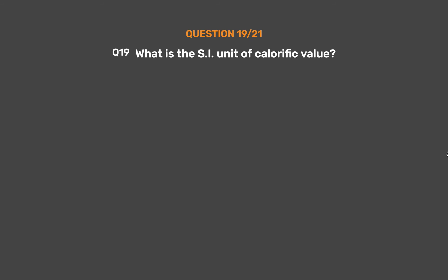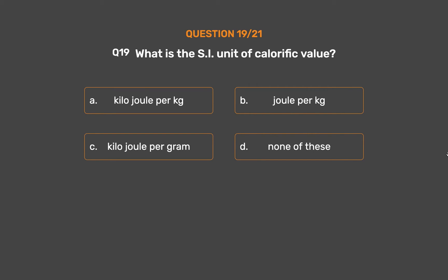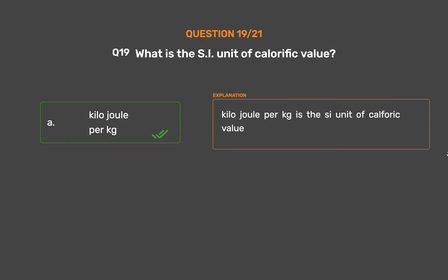Question number 19: What is the SI unit of calorific value? Option A: Kilojoule per kilogram. Option B: Joule per kilogram. Option D: None of these. The correct answer is Option A: Kilojoule per kilogram. Kilojoule per kilogram is the SI unit of calorific value.